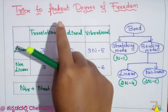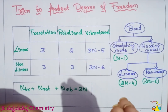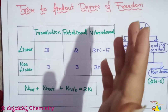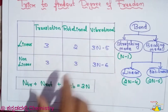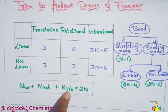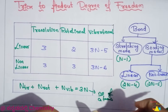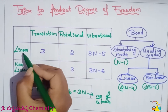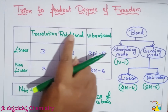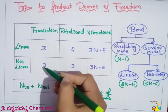Next trick: how to find the degree of freedom. There is a concept of translation, rotational, and vibrational degrees of freedom. Given a molecule — linear or non-linear — translational degrees of freedom for both linear and non-linear is always 3.